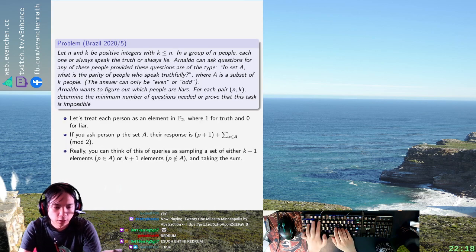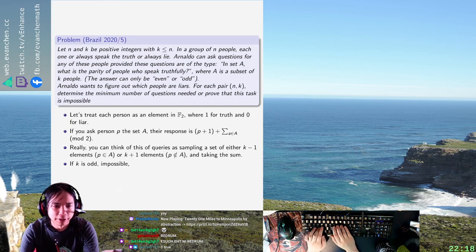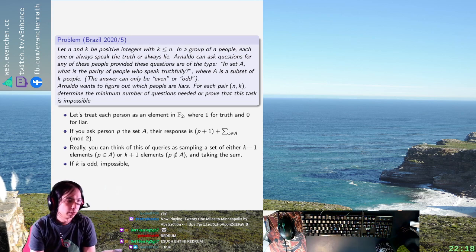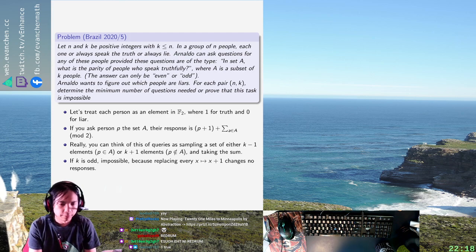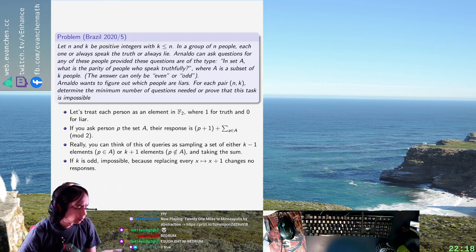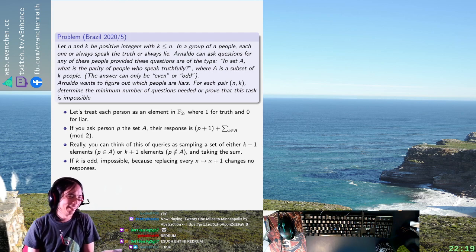Now if K is odd, the task is impossible because replacing every variable X with one minus X changes no responses. So you can invert the truthfulness of every person and none of the responses change. Because you can't distinguish between the two cases, you can't tell the number of truth-tellers — you can't distinguish between everyone lying and everyone being truthful.